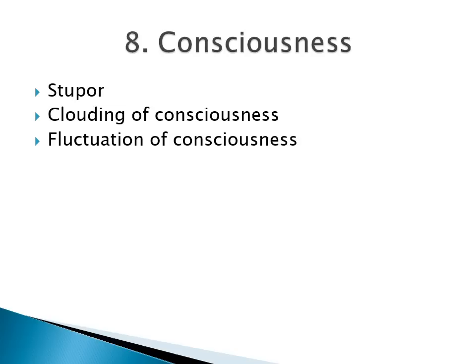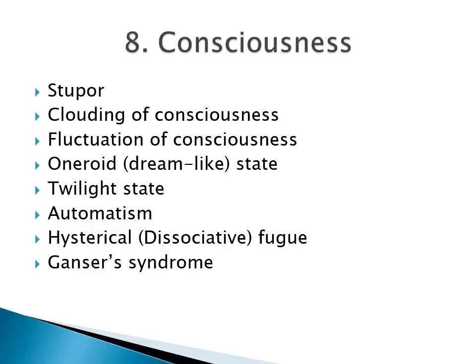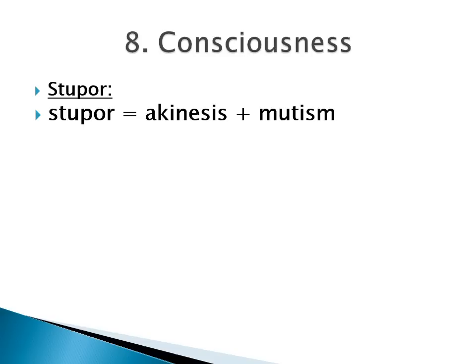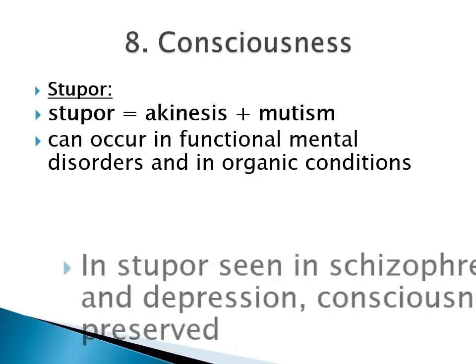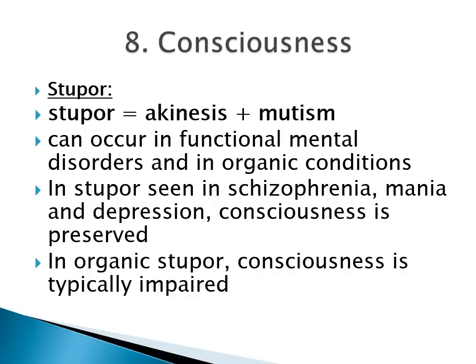Some disorders of consciousness include stupor, clouding of consciousness, fluctuation of consciousness, oneroid or dream-like state, twilight state, automatism, hysterical or dissociative fugue, and Ganser's syndrome. Stupor is a combination of akinesia and mutism — the patient does not move and does not say anything. It can occur in functional mental disorders and in organic conditions. In stupor seen in catatonia — occurring in schizophrenia, mania, or depression — consciousness is preserved, whereas in organic stupor consciousness is typically impaired.